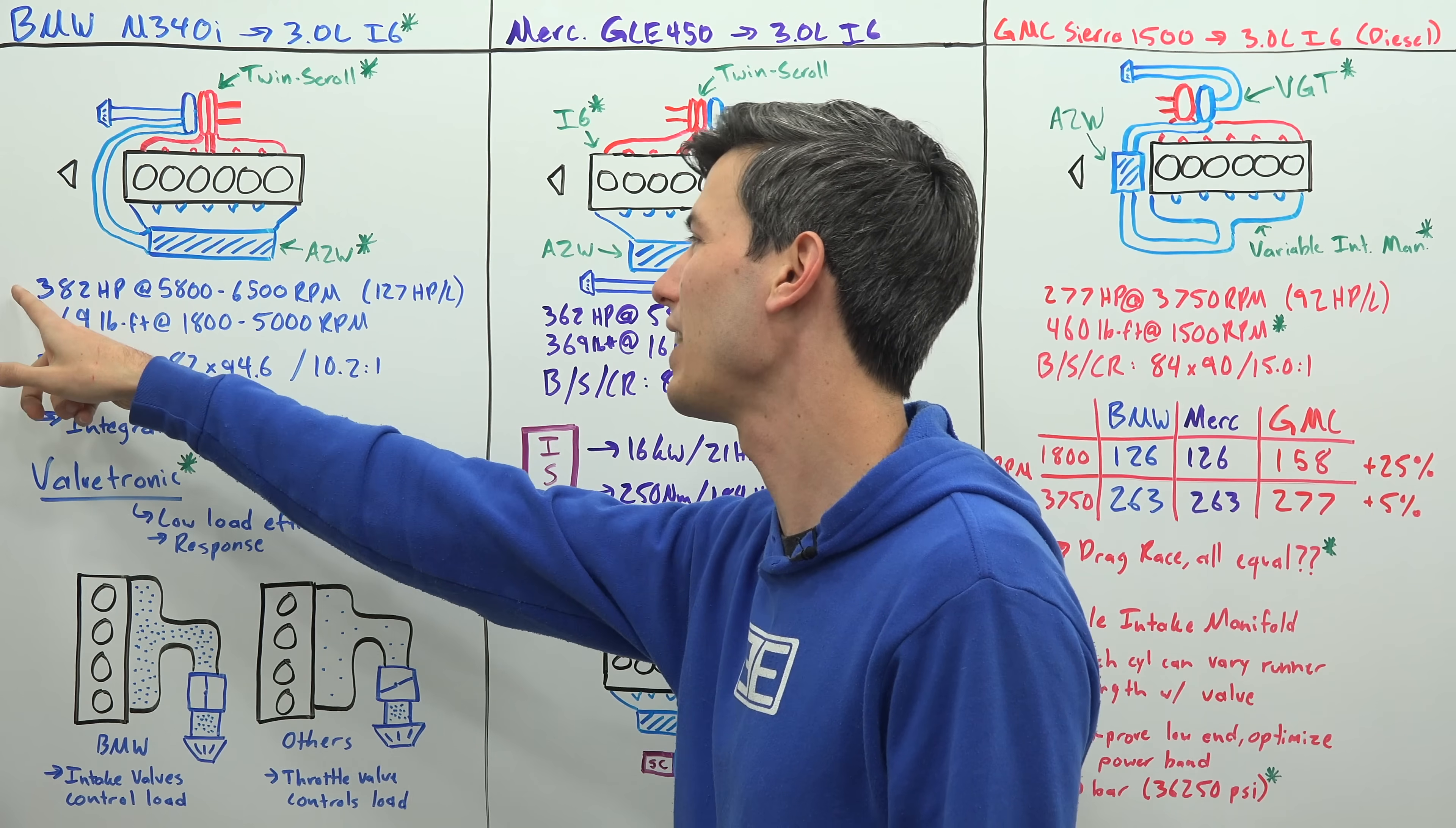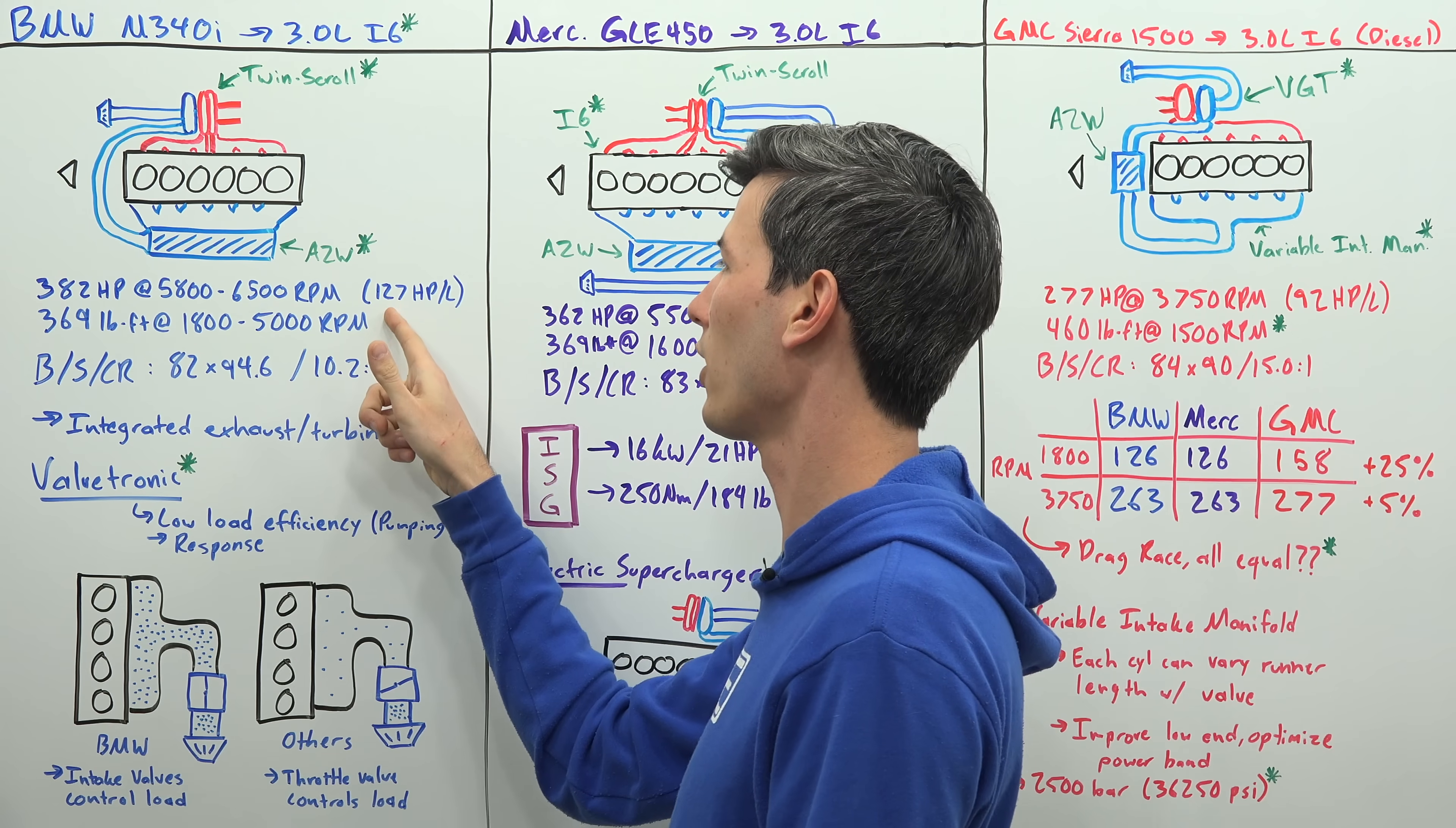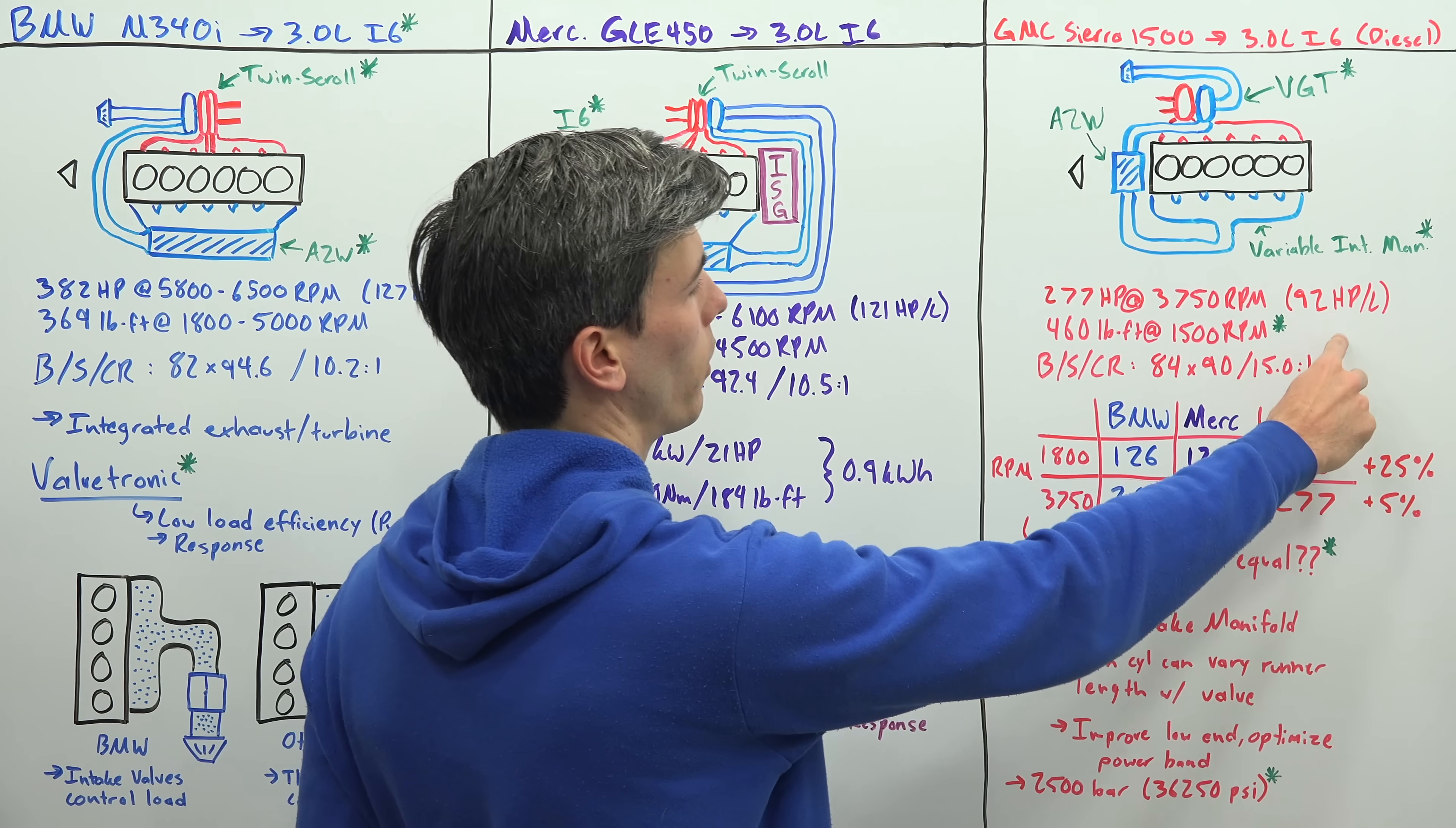Which of these engines makes the most power? Well that goes to the BMW: 382 horsepower, 369 pound-feet of torque. The Mercedes not too far behind: 362 horsepower, also 369 pound-feet of torque. The BMW making 127 horsepower per liter, the Mercedes making 121 horsepower per liter. Then moving on to our diesel engine, only 277 horsepower, just 92 horsepower per liter, but 460 pound-feet of torque.